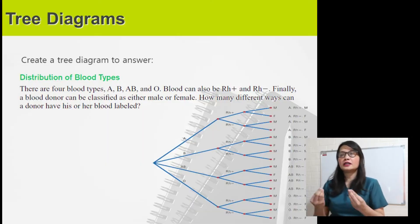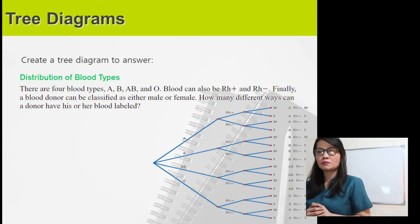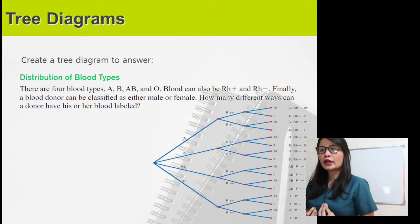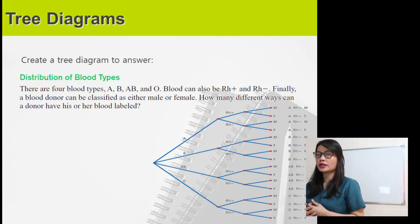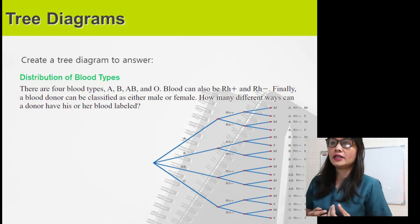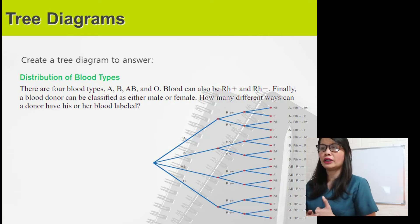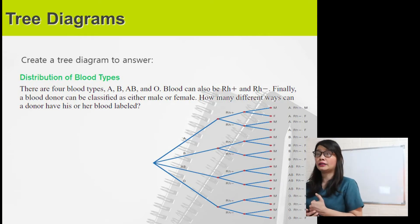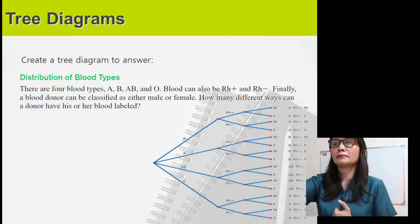Next, create a tree diagram to answer: there are four blood types — A, B, AB, and O. Blood can also be RH positive and RH negative. Finally, a blood donor can be classified as either male or female. How many different ways can a donor have his or her blood classified?